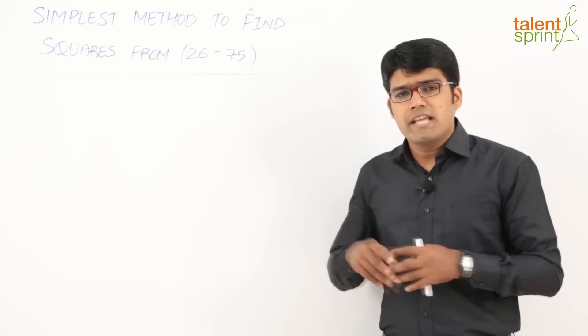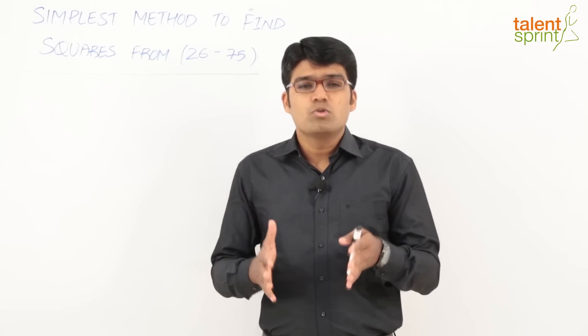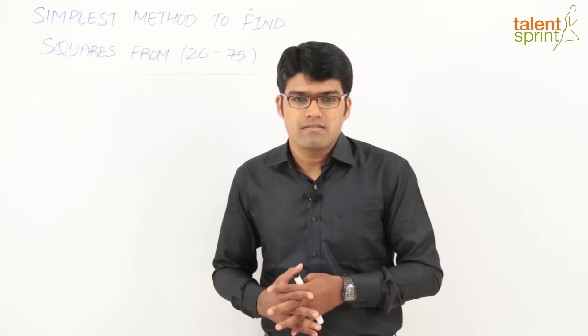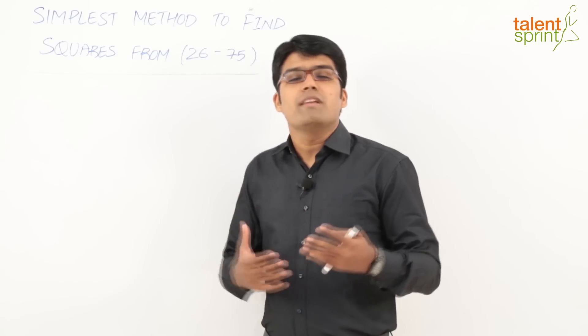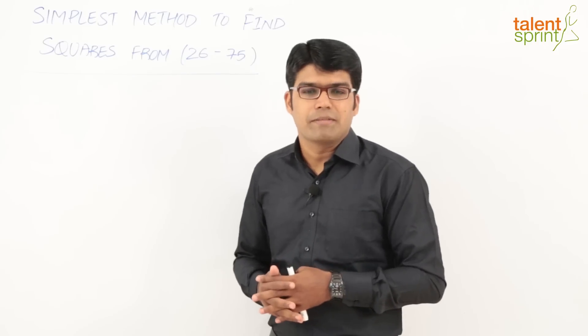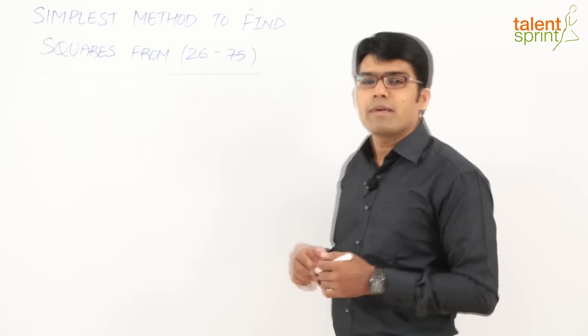Now before I actually explain anything about it, let me tell you, you need to learn 1 to 25 squares by heart. Squares of numbers from 1 to 25 should be there on your fingertips for you to be able to calculate the other squares effectively. So assuming that you all are perfect with 1 to 25 squares, let us look at the method here.